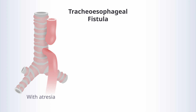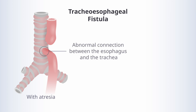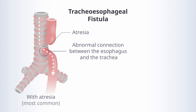On the other hand, a tracheoesophageal fistula is an abnormal connection between the esophagus and the trachea. So we're seeing here atresia because the esophagus is interrupted, but we're also seeing a fistula tract where the lower segment of the esophagus actually dumps into the trachea. This association is actually the most common of the various fistulas and/or atresias that can occur involving the esophagus and the trachea.